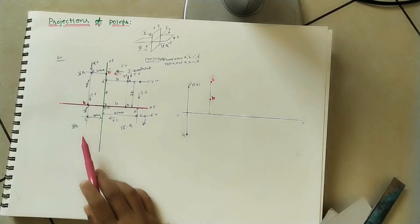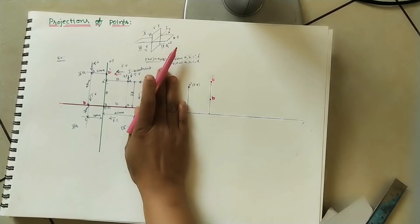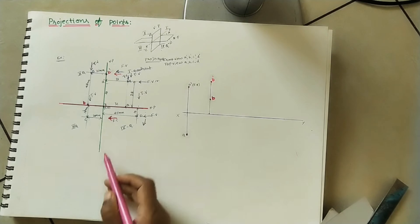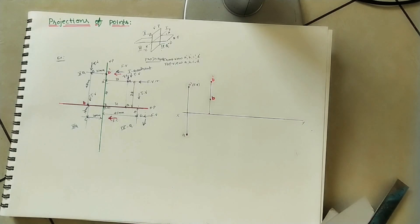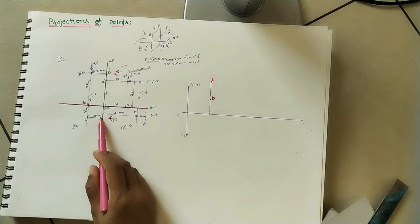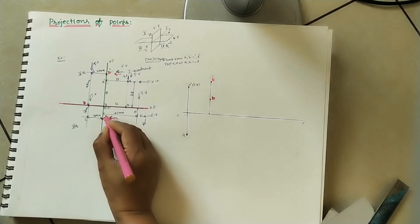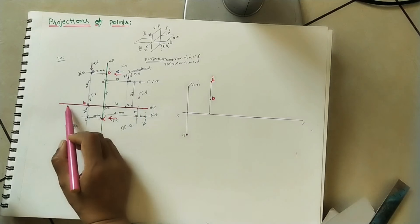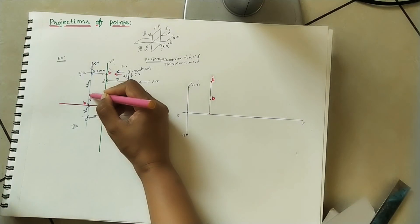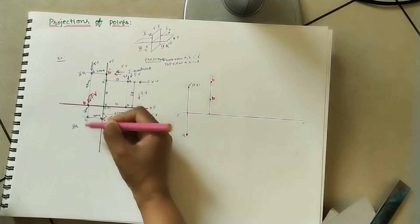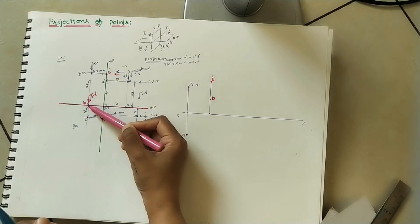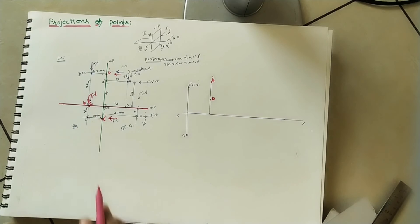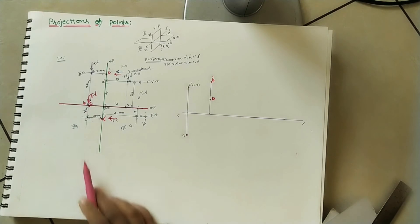Now take point C — it is in the third quadrant (below HP, behind VP). The observer sees the front view from the front side; C' appears on the vertical plane at 18 mm. The top view is seen from above: C appears on the horizontal plane at 20 mm gap.